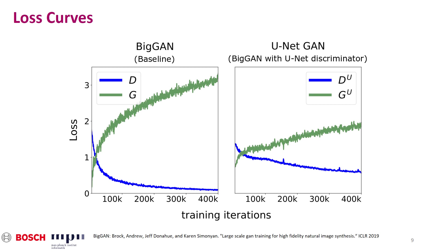The discriminator loss is low when the discriminator can almost perfectly distinguish real and fake images. This is less likely to happen in the U-Net discriminator, because it would require the encoder loss as well as the individual decoder losses to agree with each other. Hence, in the right plot, you see that the U-Net discriminator loss drops more slowly and provides useful gradients throughout training, which results in better image quality.